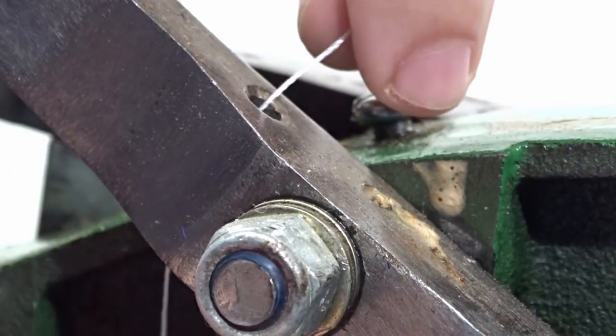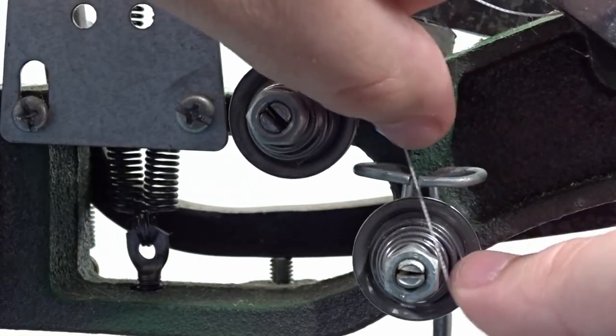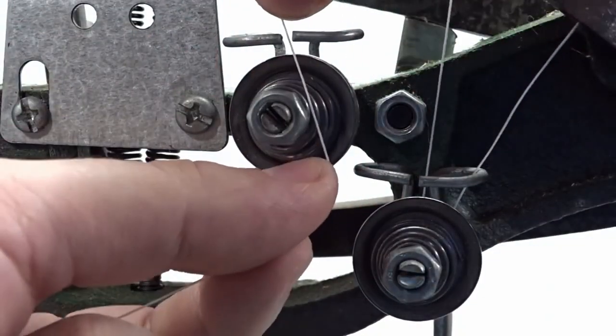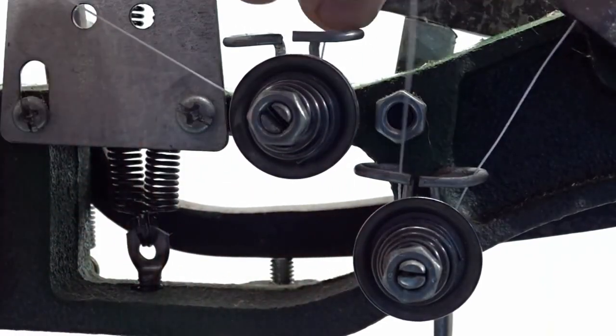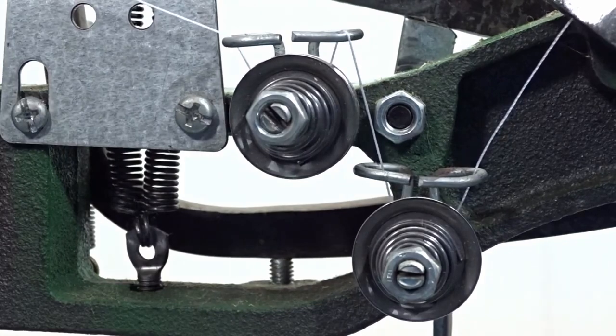This is all pretty much self-explanatory by watching the video. The important thing here is that you get it around or get it inside your plates for tension. The machine will not work right if the thread's not under tension. You may need to play with this—sometimes I've used one, sometimes I use both.